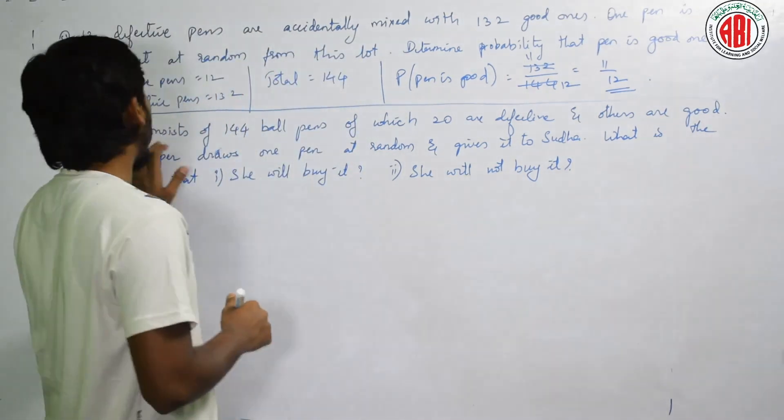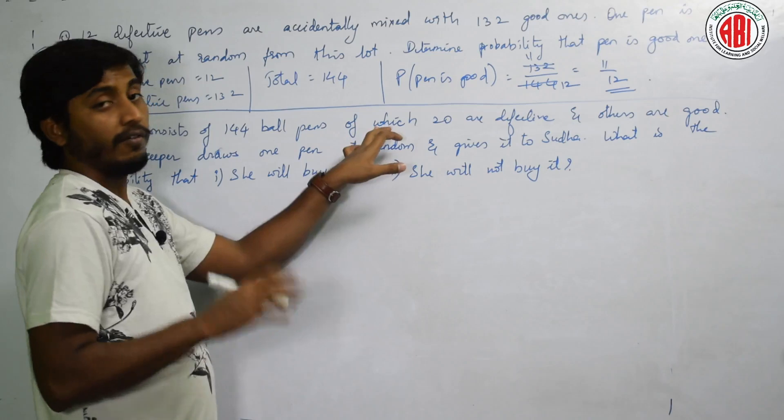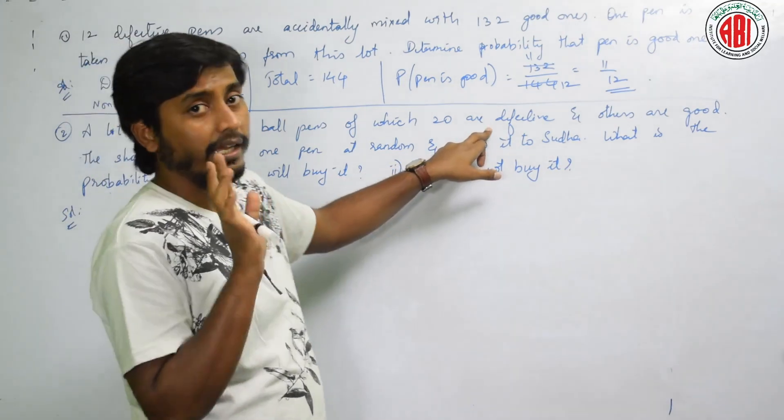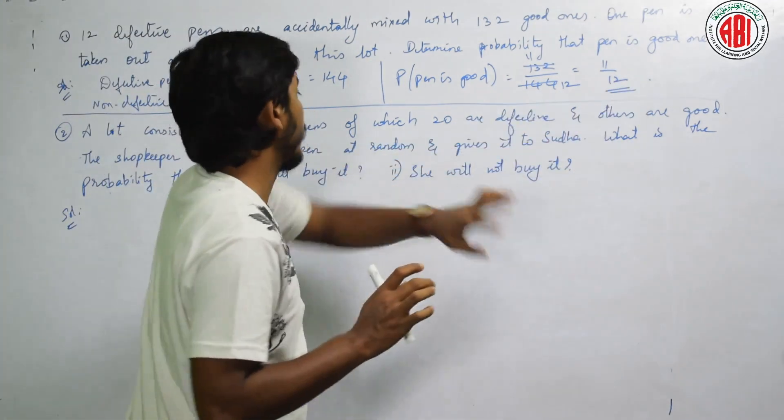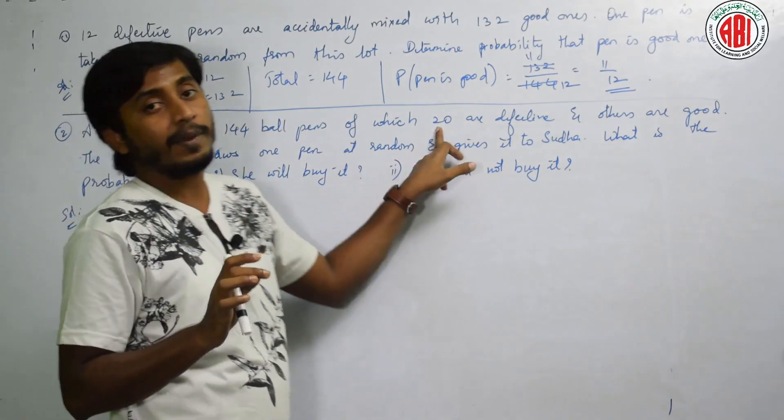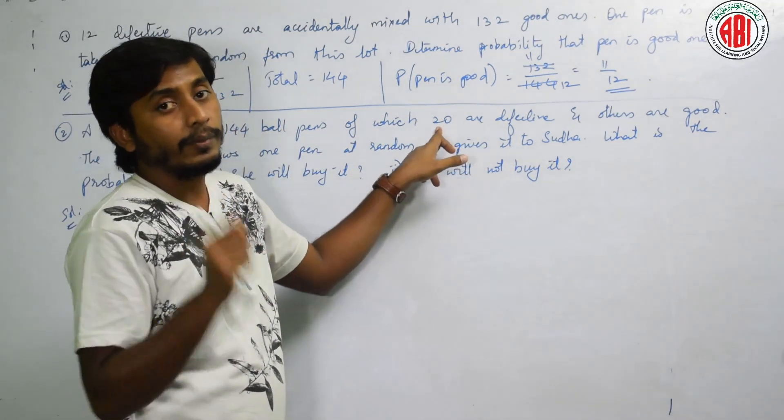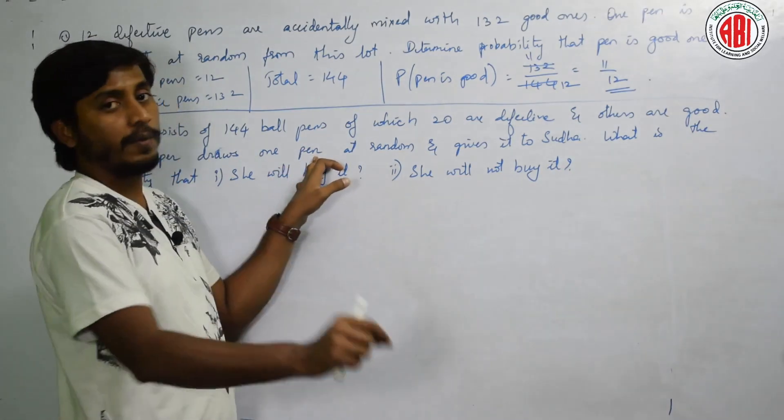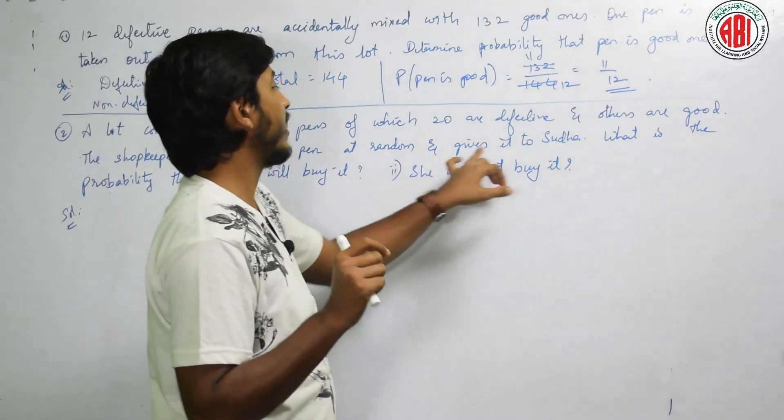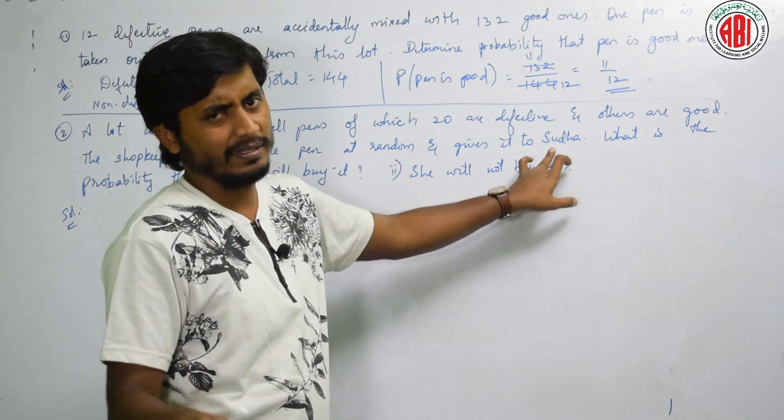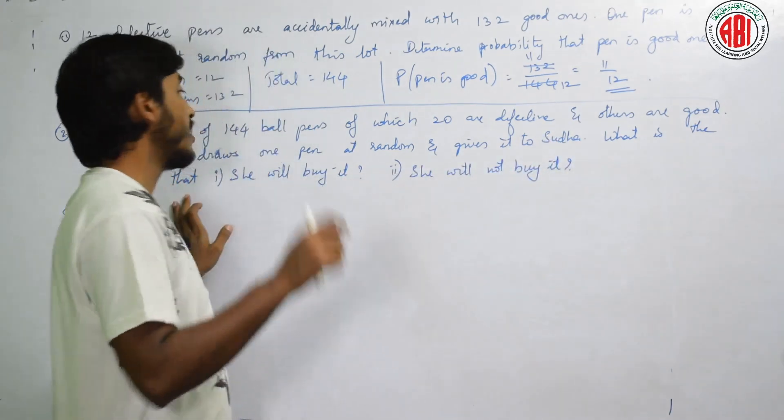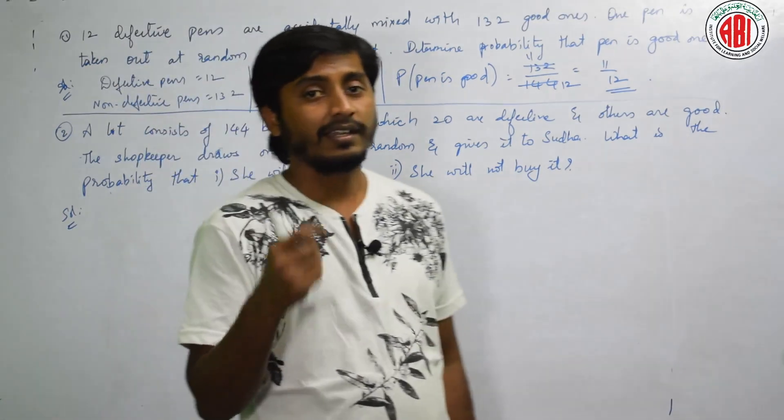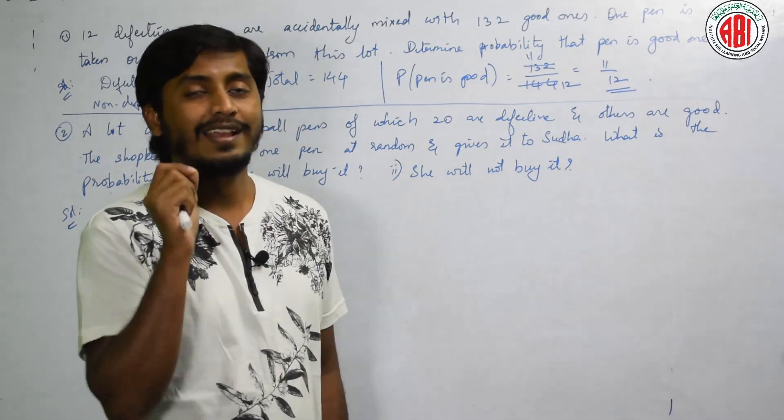Next question. A lot consists of 144 ball pens, out of which 20 are defective. 144 me se 20 defective hai to kitna milega? 124 are good ones. The shopkeeper draws one pen at random and gives it to Sudha. What is the probability that she will buy it and she will not buy it? Buy means if it is good then only she will buy right?